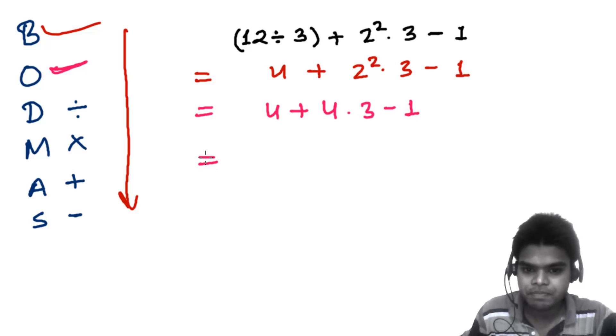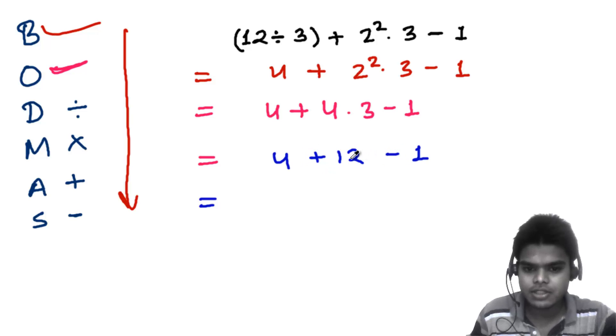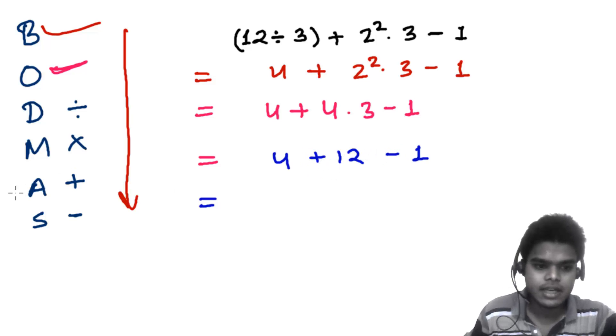Now we have multiplication, addition, and subtraction. Multiplication comes first, so 4 times 3 is 12. So 4 plus 12 minus 1. Addition is first, then subtraction, so 4 plus 12 is 16 minus 1, and the answer is 15.